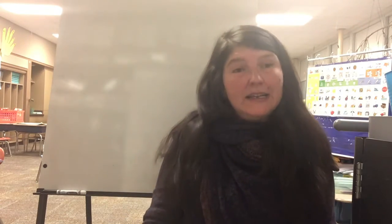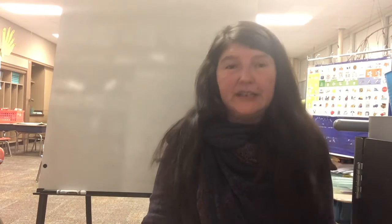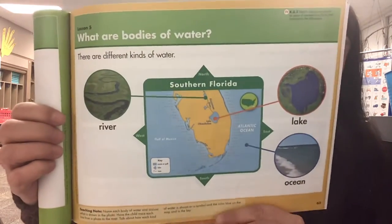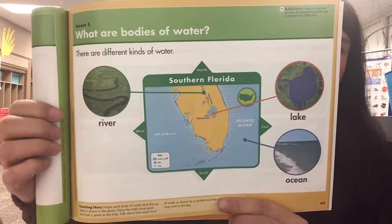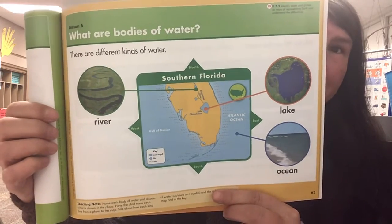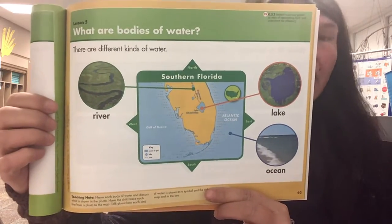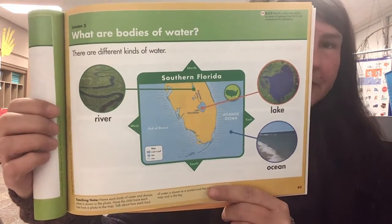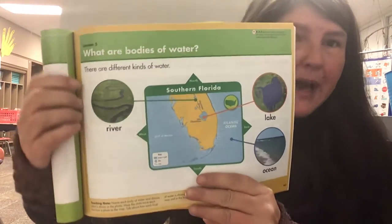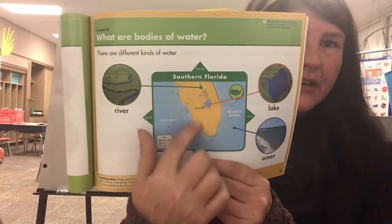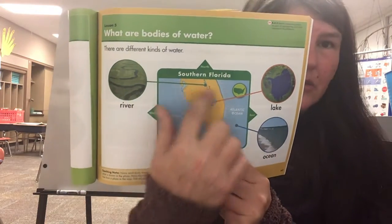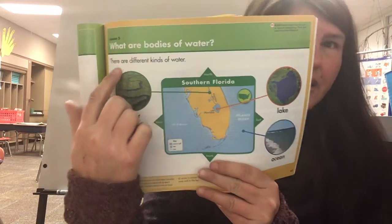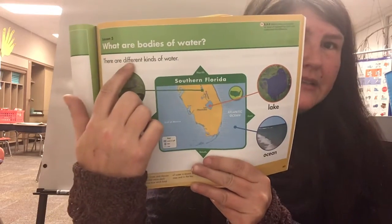Hi boys and girls, today for social studies we're on page 63. Hopefully you have a bookmark in place to help you find page 63. It says 'What are bodies of water?' Here on our map this is Florida — southern Florida — so it's only part of Florida, but it says there are three different kinds of water.